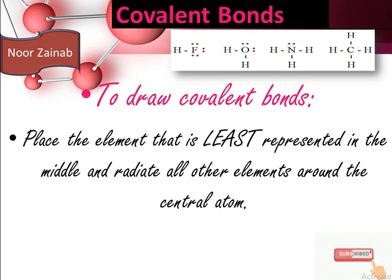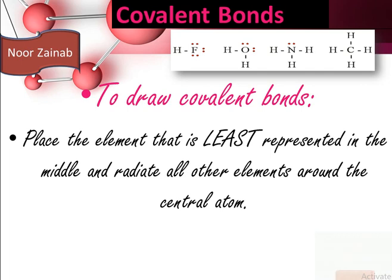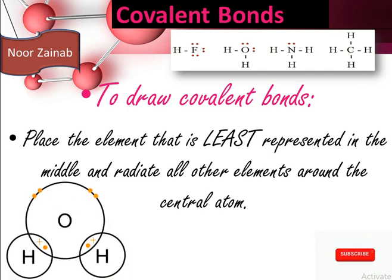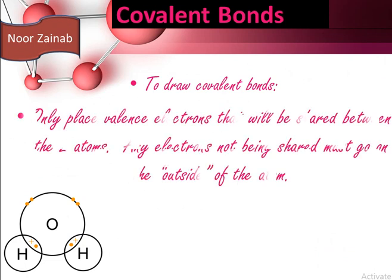To draw covalent bond structures, first place the element that is least represented in the middle and radiate all other elements around the central atom. For example, in HF, F is the central atom; in H₂O, O is the central atom; in NH₃, N is the central atom; and in CH₄, C is the central atom.